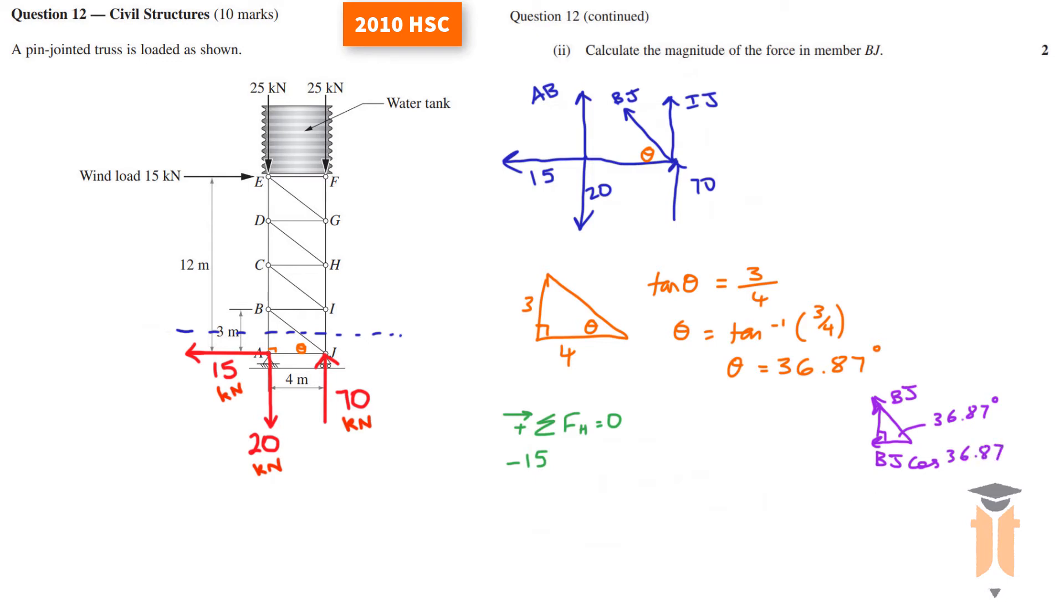Putting that back into the equation, we have minus 15 minus BJ cos 36.87 is equal to 0. Make BJ the subject and you get BJ is equal to negative 15 over cos 36.87, and you get the answer to be negative 18.75 kilonewtons. Because it's asking for magnitude, we don't really care about the direction, so BJ is equal to 18.75 kilonewtons.